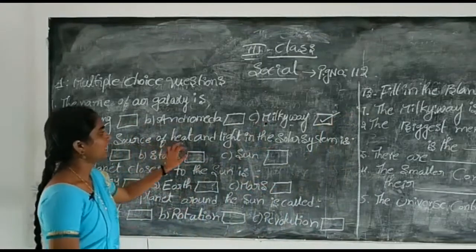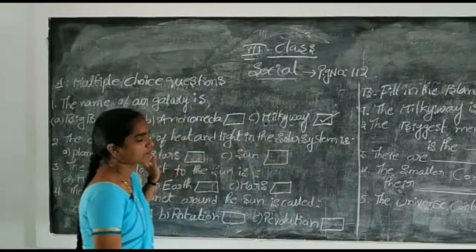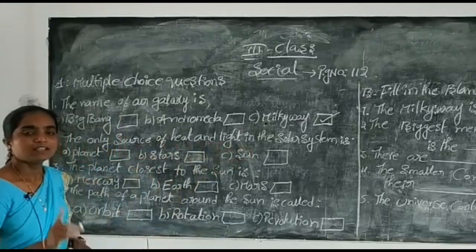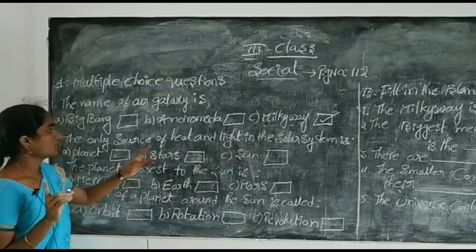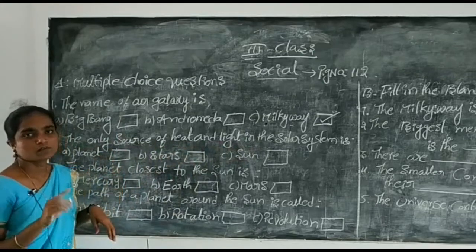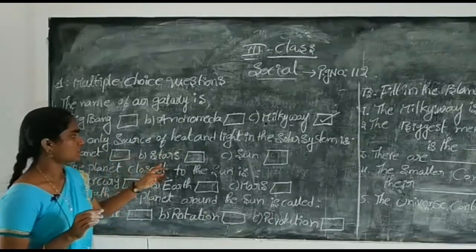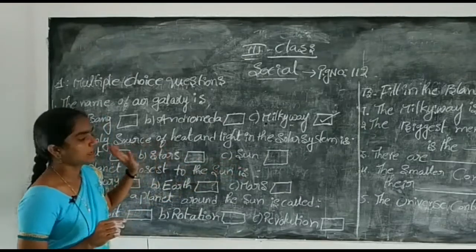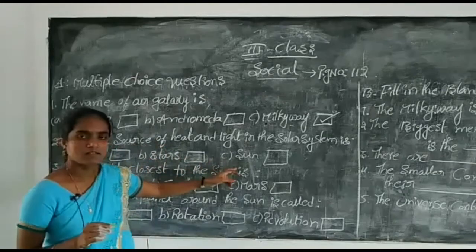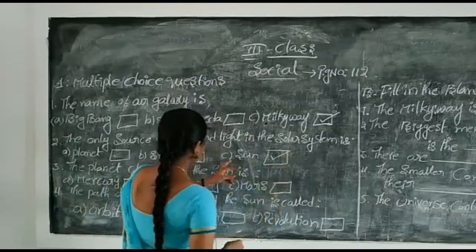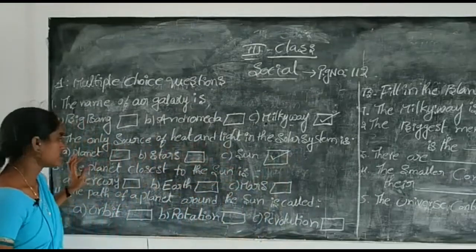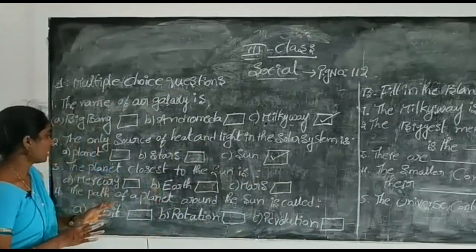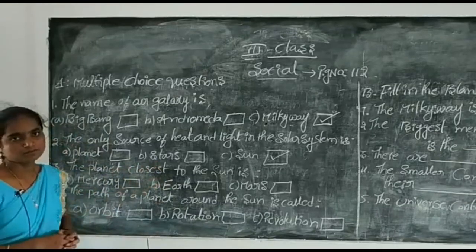The only source of heat and light in the solar system is what? Planet, stars, or sun? Sun is the only source of heat and light in the solar system.